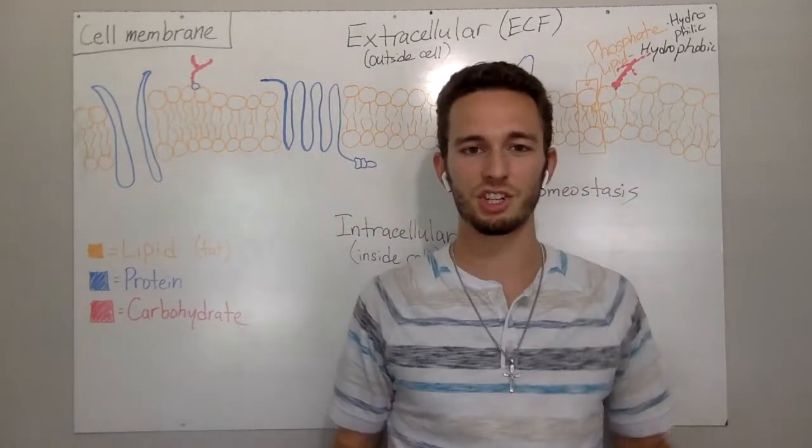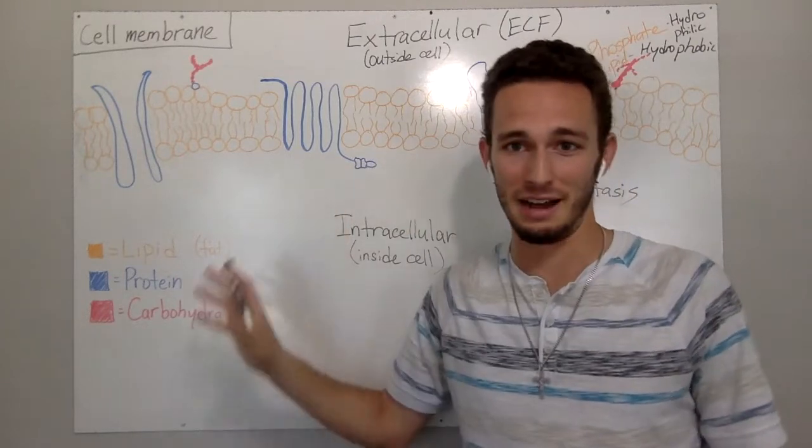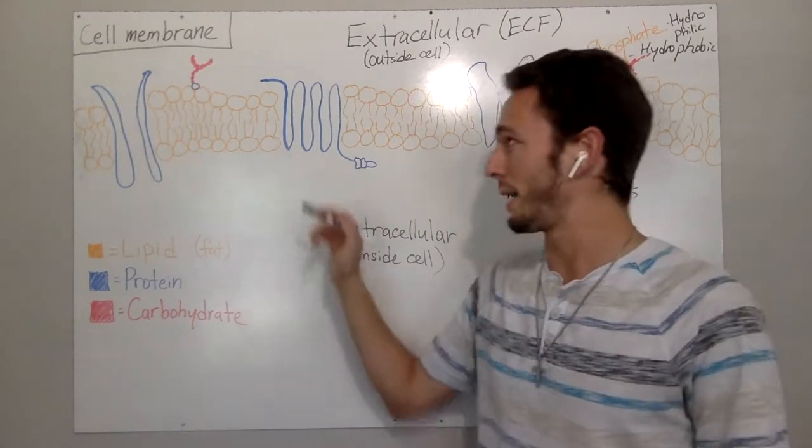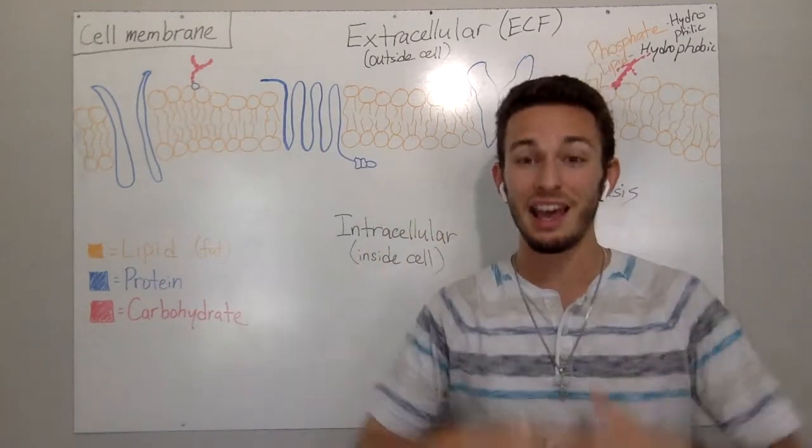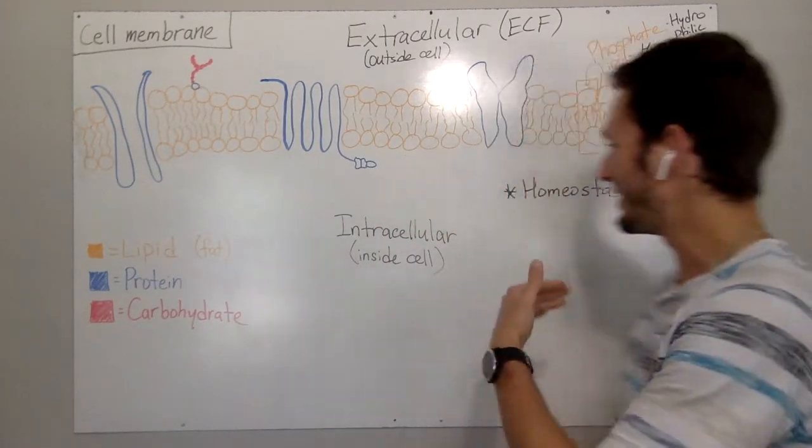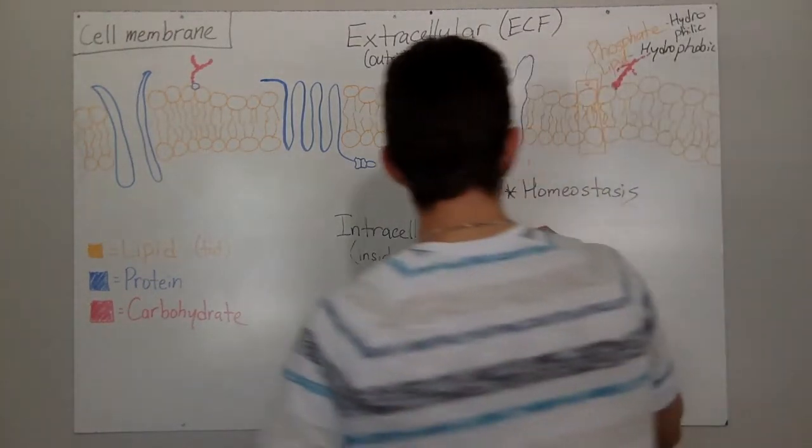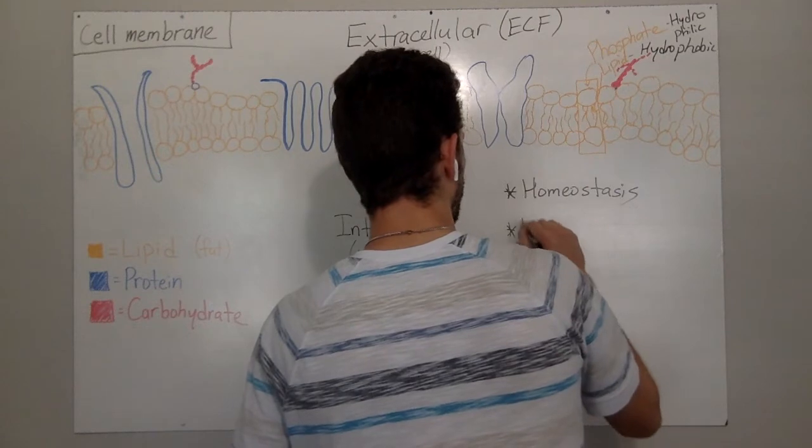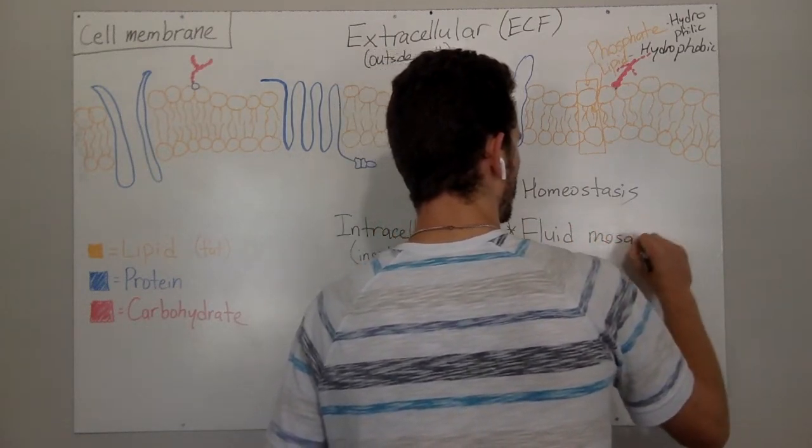But once again, big picture: the cell membrane is more than just a phospholipid bilayer. It's got proteins, it's got carbohydrates, it's got all of these components that help regulate the cell, maintain homeostasis. And one final term that I forgot to give you is that the whole cell membrane is considered a fluid mosaic model.